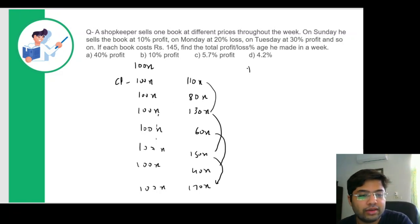So let's see what it comes out. So total CP comes out to be 700X and total SP comes out to be, if you add all these, you'll get 740X. So profit becomes 40X, cost price is 700X.